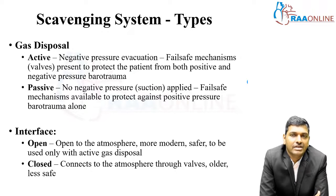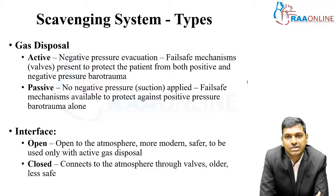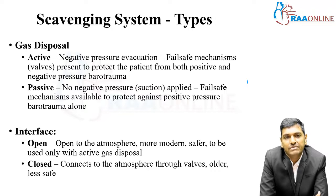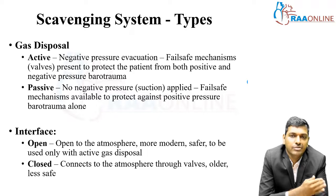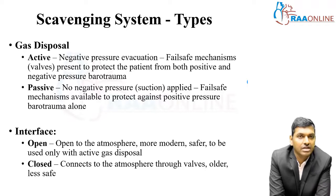The scavenging system can also be classified according to the interface — whether it is an open interface or a closed interface. Open interfaces are open to the atmosphere; they are more modern, safer, and must be used only with active gas disposal. Closed systems connect to the atmosphere through valves — a negative pressure valve and a positive pressure valve. They are older and less safe.